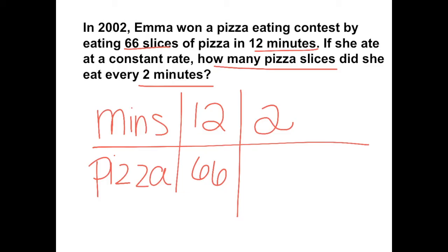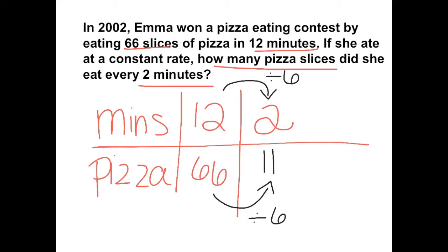We can see that to get from 12 to 2, we divide by 6. So to keep the ratios the same, we also have to divide the number of slices by 6, and that gives us 11 slices. So she ate 11 slices every 2 minutes.